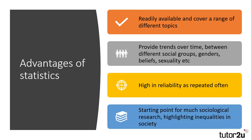There are several advantages to using statistics. Firstly, they are easy to access and regularly updated for a range of different topics across society. With the advent of the internet, the gov.uk website hosts these updates once published, and anybody can access them, which is a great benefit to sociologists. They provide trends over time so sociologists can see the impacts of social changes. Furthermore, they look at differences based on ethnicity, gender, sexuality and religious beliefs, which help researchers to spot inequality and diversity in contemporary society.